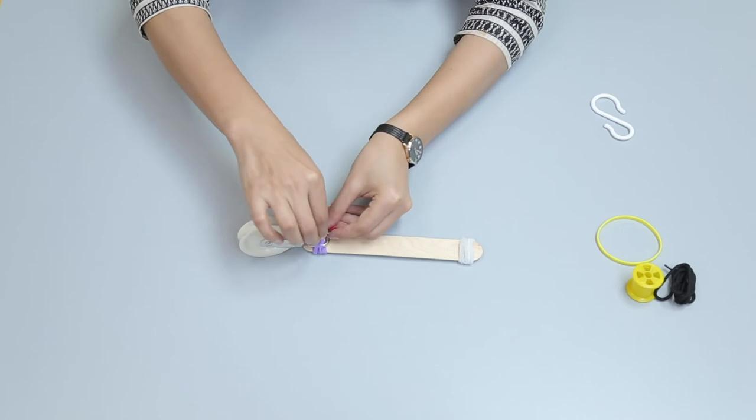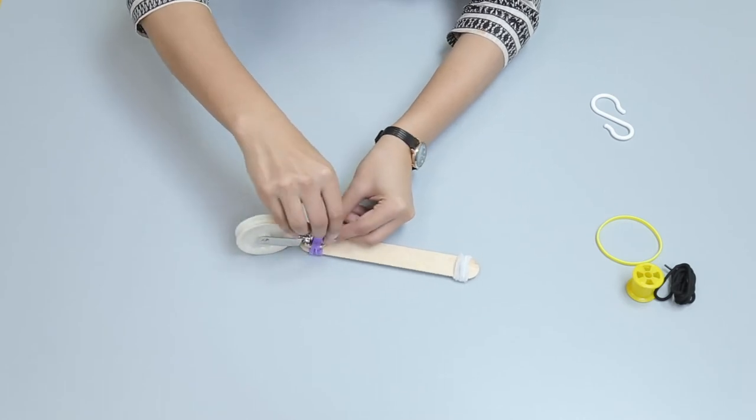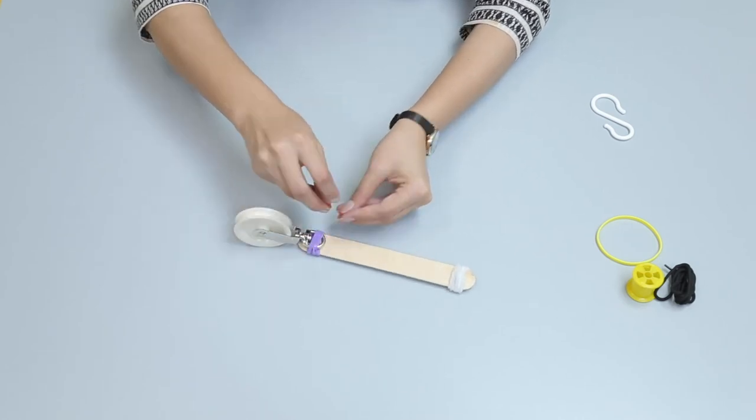Slip one plastic chain link onto the rubber band and one onto the chenille stem to make a guide for the shoelace.